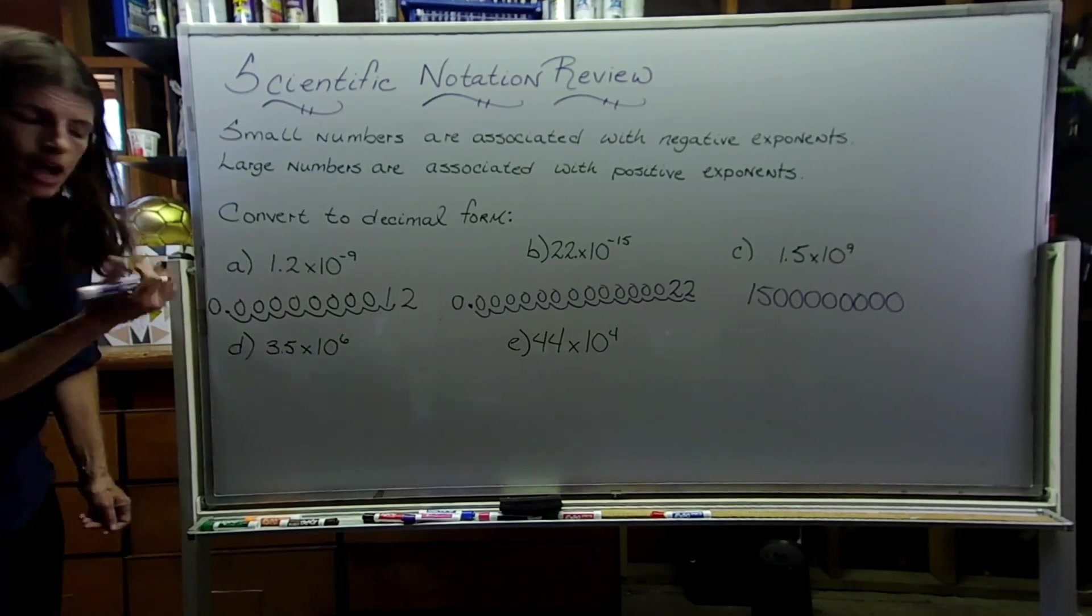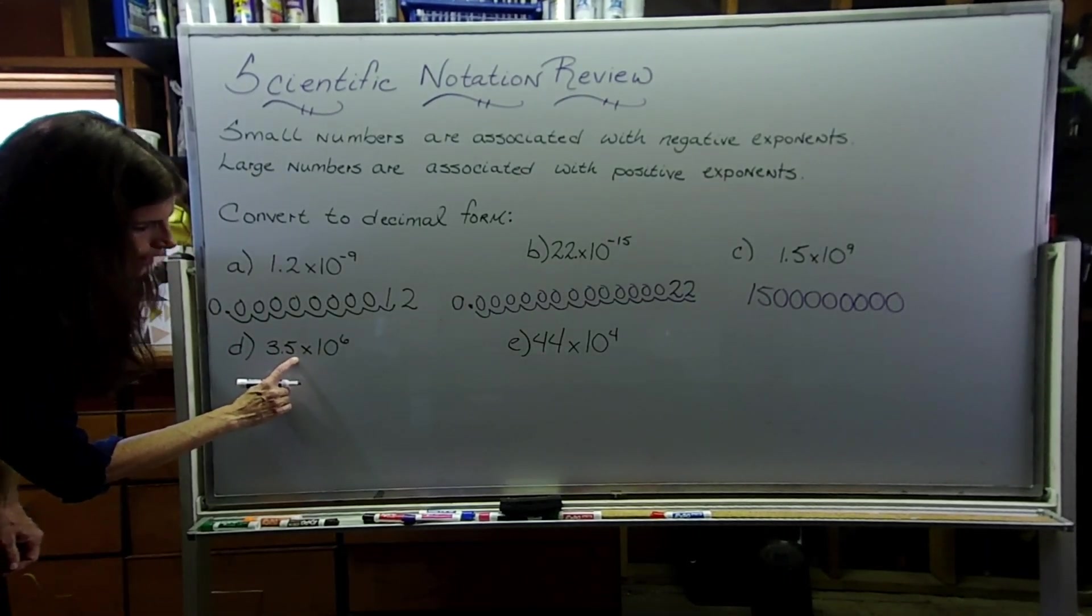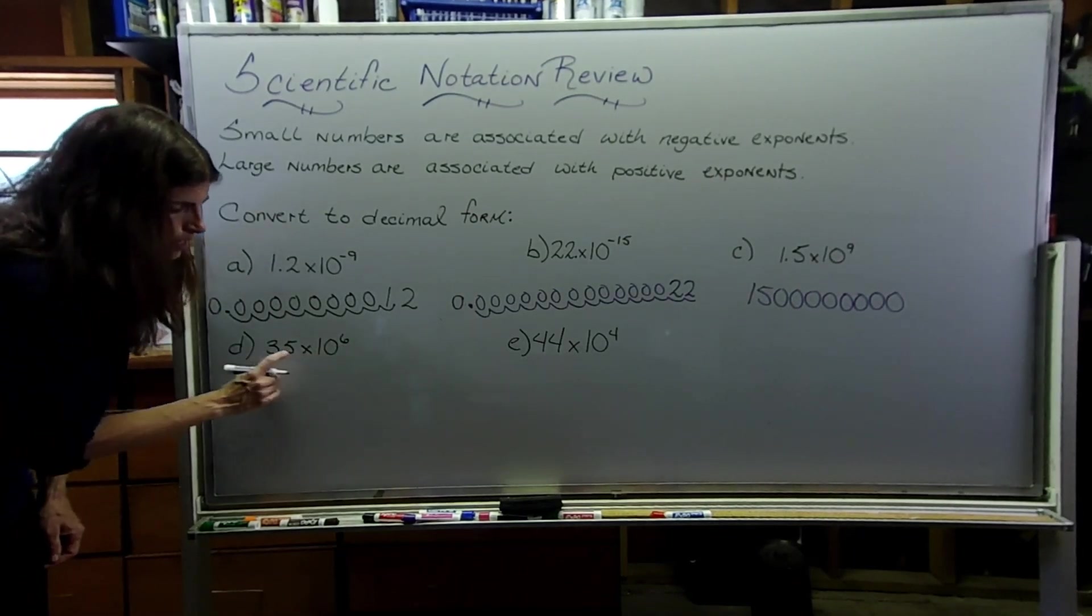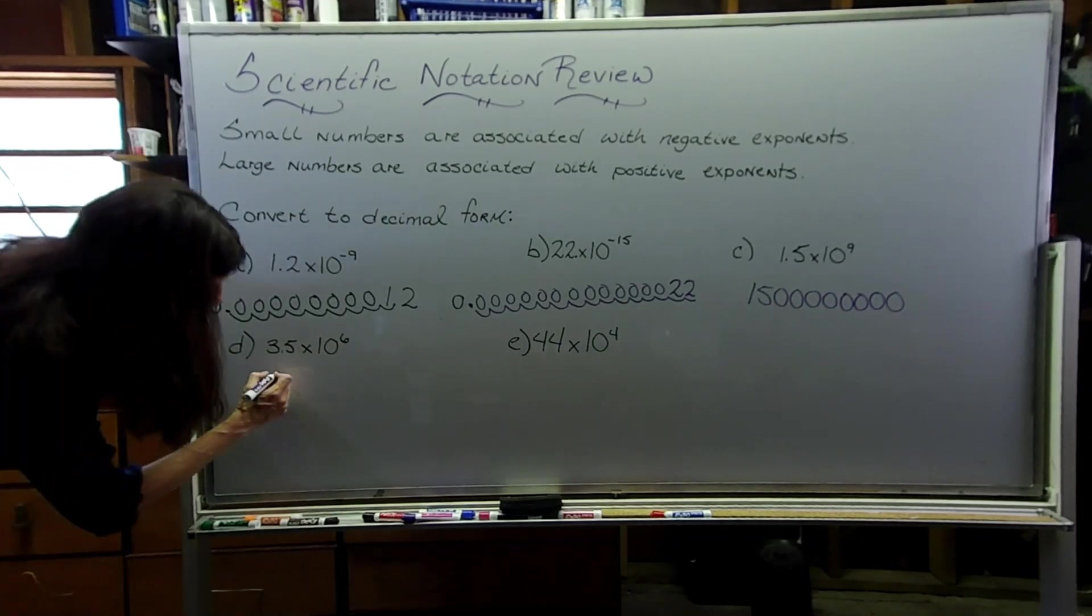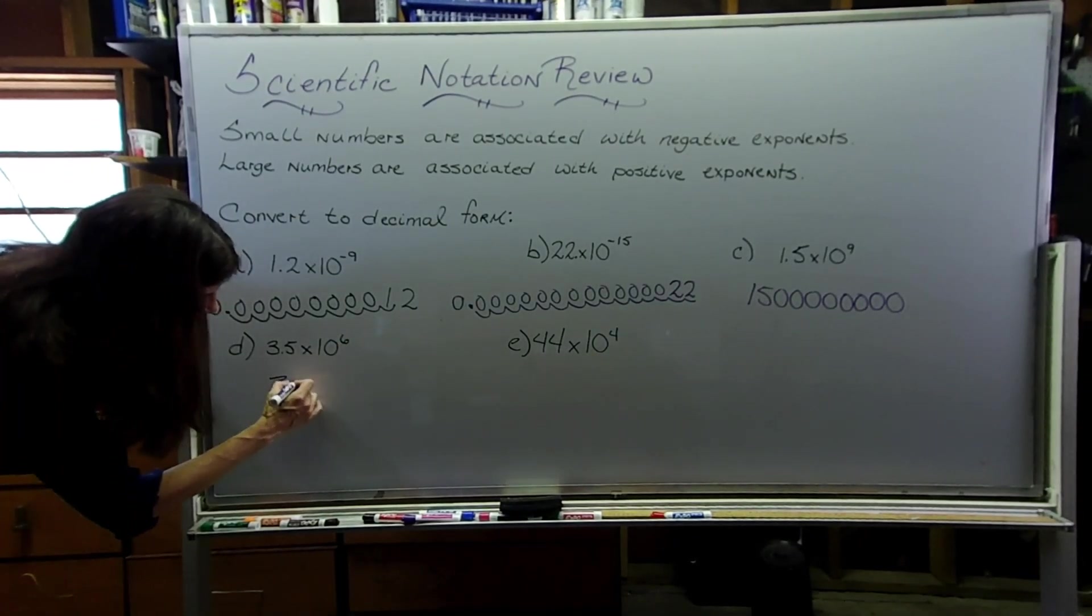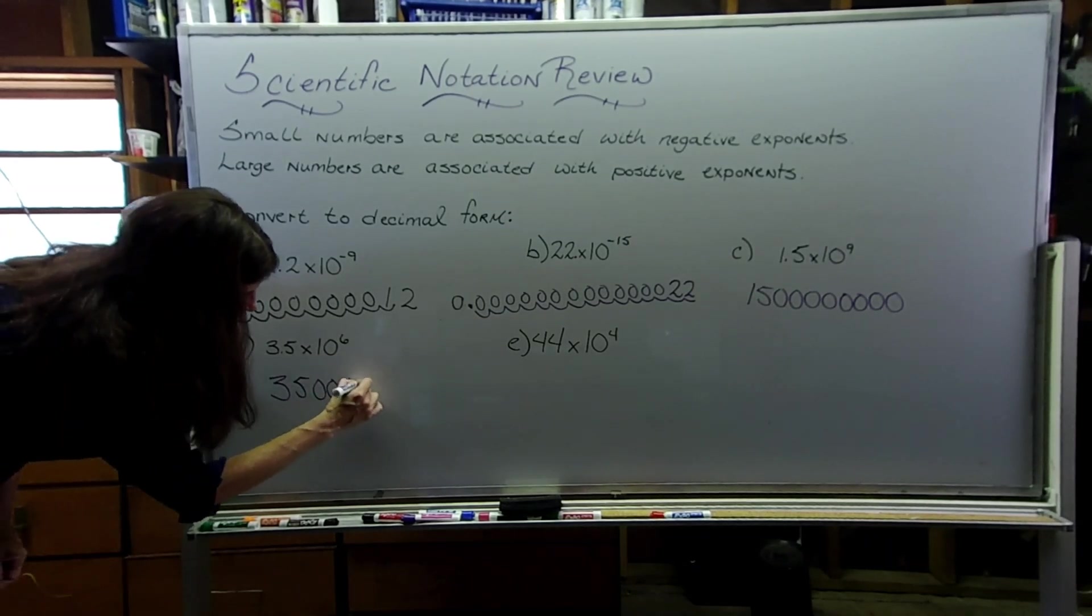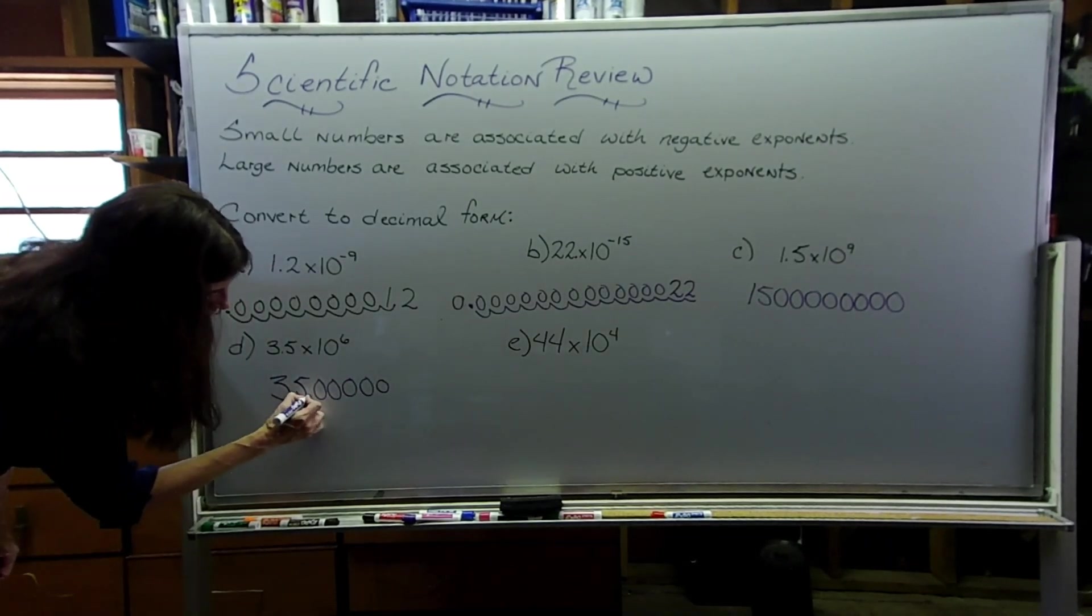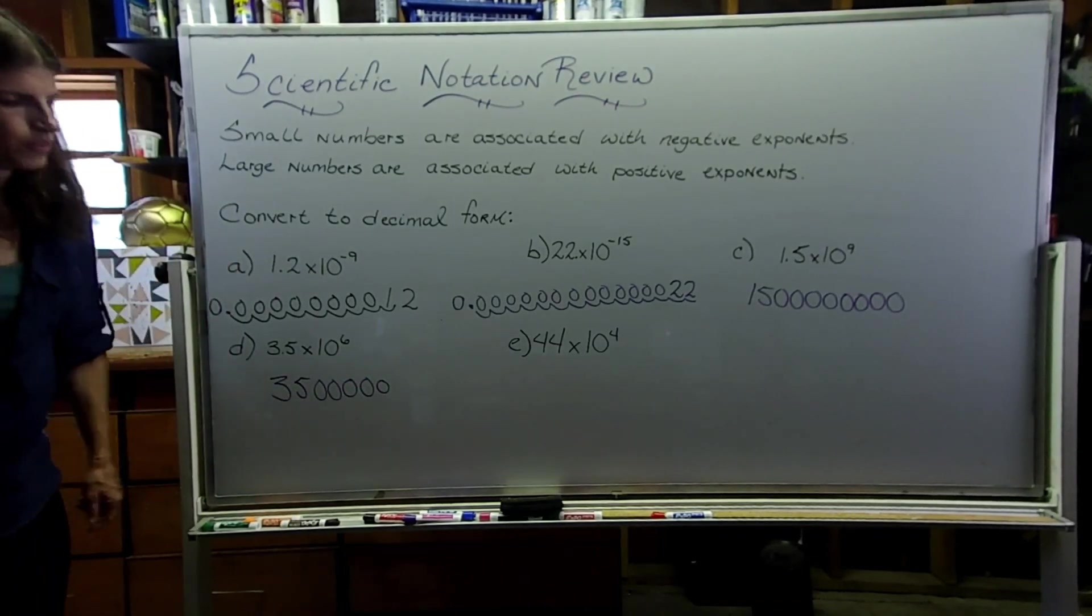And here we also have a big number, same kind of approach. The first jump to the right is going to be to get rid of that, to move it away from the 5, and then we got 5 more jumps after that, or 5 more zeros to add. We moved it 6 times total.